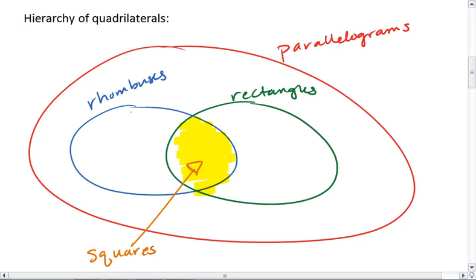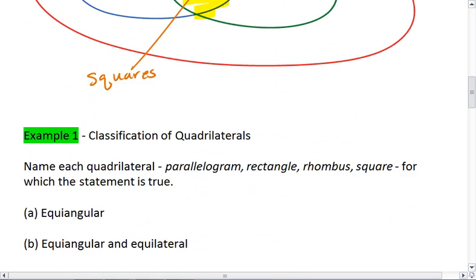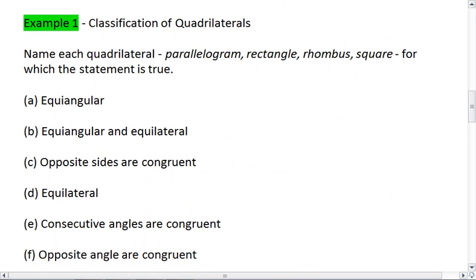A rhombus is always a parallelogram. A rectangle is always a parallelogram. And that's it. If you're ready, you can go on and try example one, classification of quadrilaterals.